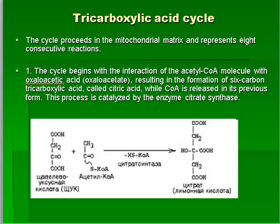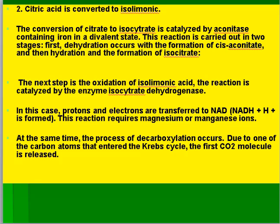The tricarboxylic acid cycle persists in the mitochondrial matrix and represents eight consecutive reactions. The cycle begins with the interaction of an acetyl-CoA molecule with oxaloacetic acid, resulting in the formation of a six-carbon tricarboxylic acid called citric acid, while CoA is released in its previous form. This process is catalyzed by the enzyme citrate synthase. Citric acid is then converted to isocitrate — this conversion is catalyzed by an enzyme containing iron in the divalent state, occurring in two stages: first dehydration with formation of cis-aconitate, then hydration to form isocitrate.